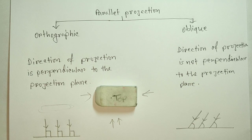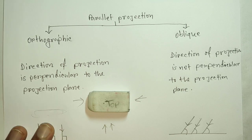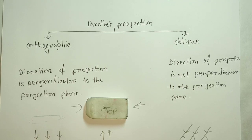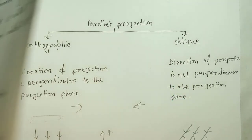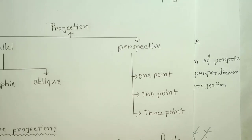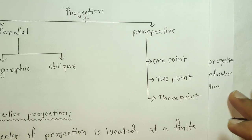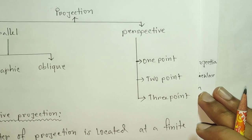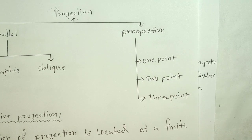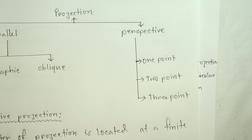The perspective projection has types: 1-point, 2-point, and 3-point perspective projection. The 1-point perspective projection is the simplest to draw.